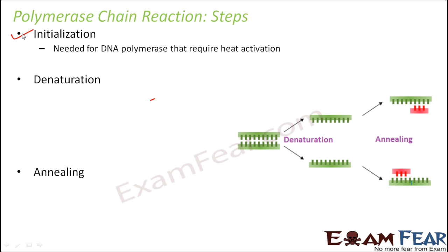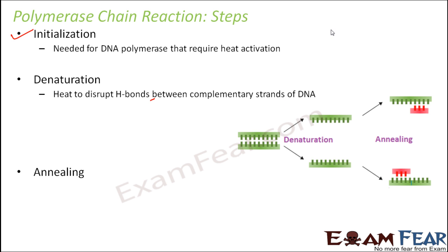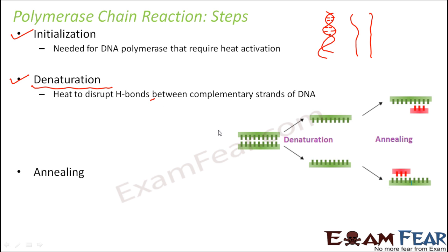Next is denaturation. In denaturation, the DNA is heated to disrupt the hydrogen bonds between the complementary strands of DNA. As we know, DNA is a double-stranded structure and the two strands are connected with the help of hydrogen bonds between the base pairs. If the hydrogen bond is broken, the two strands will separate — and that is exactly what happens in denaturation. The DNA is heated such that the hydrogen bonds break and the two strands separate out.